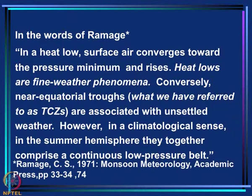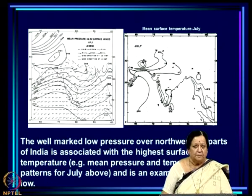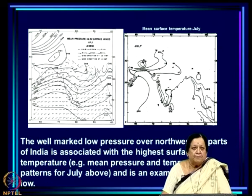Ramage describes a heat low as follows: surface air converges toward the pressure minimum and rises. Heat lows are a fine weather phenomenon. In contrast, near-equatorial troughs — what we refer to as TCGs — are associated with unsettled weather, meaning rain. However, in a climatological sense in the summer hemisphere, they together comprise a continuous low pressure belt.